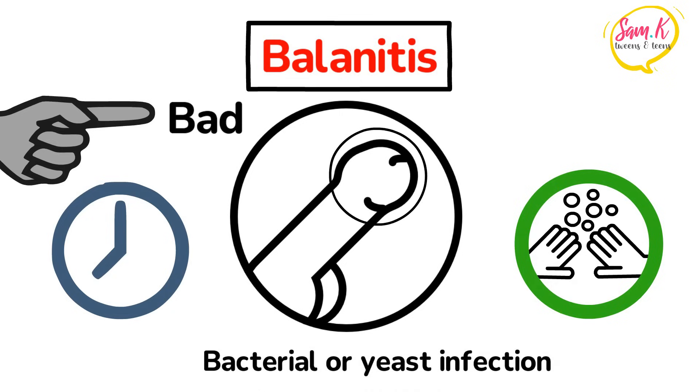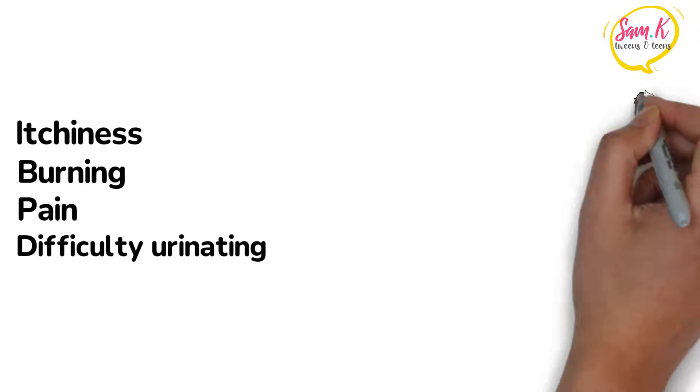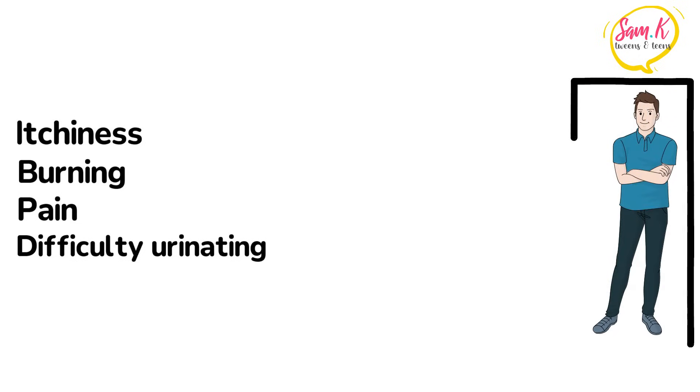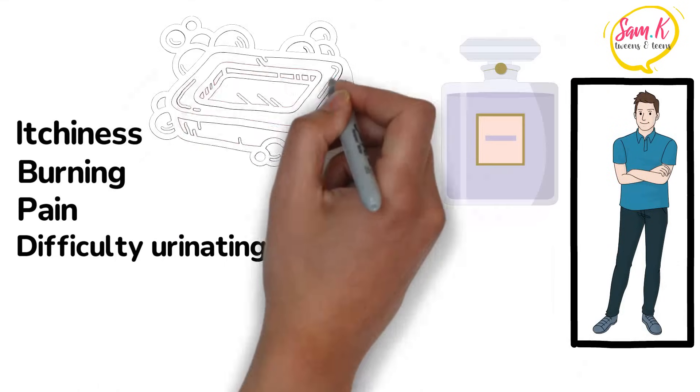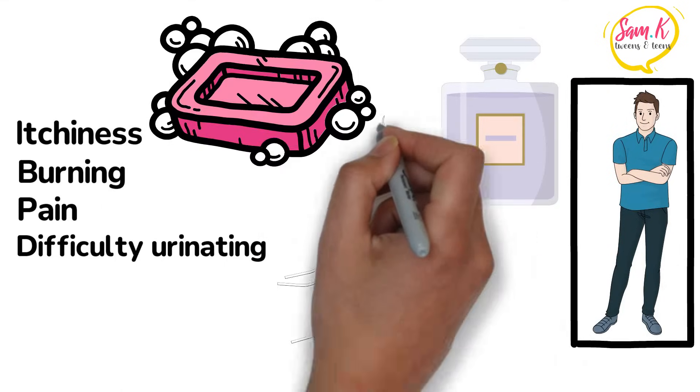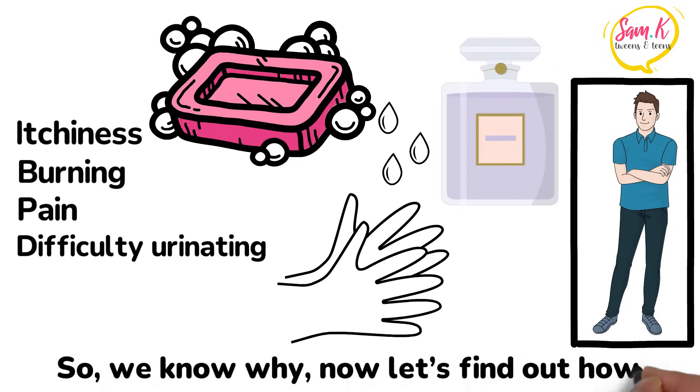Symptoms include itchiness, burning, pain, and difficulty urinating—all things we try to avoid. Now while it's most common in boys that aren't circumcised, balanitis affects all boys and can be brought on by using perfumed or scented soaps or by not rinsing soap off properly after washing. So we know why, now let's find out how.